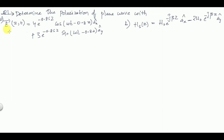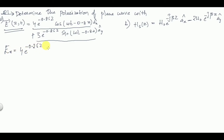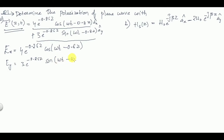See the first question — the electric field is given directly. This will be the x-component and this will be the y-component. So E_x = 4 · e^(−0.25z) · cos(ωt − 0.8z), and similarly E_y = 3 · e^(−0.25z) · sin(ωt − 0.8z).